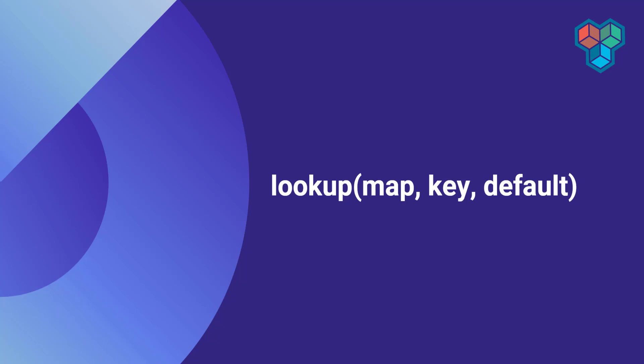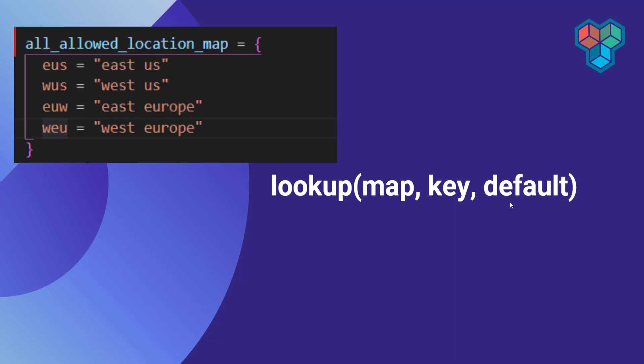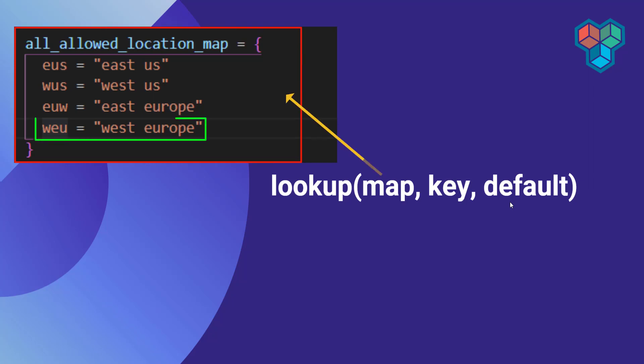You provide the name of the key to the lookup function, it will search that particular key inside the map object, and if it finds a specific key it will return the result. Then you have the third argument, which has a default value. In case the lookup function is not able to find a result within the map object with the specific key you provided, you can specify a default value.